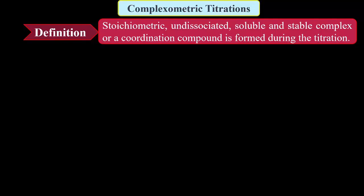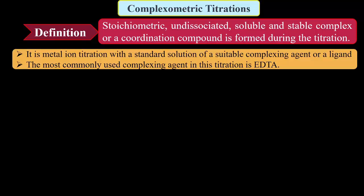Now we learn the complexometric titrations. First we have seen the definition of complexometric titrations. These complexometric titrations are stoichiometric, undissociated, soluble and stable complex or a coordination compound is formed during the titration, that is during the addition of titrant to the titrant. In complexometric titration, the metal ion solutions are titrated with the standard solution of suitable complexing agents or ligands like EDTA, cyanide ions, tartaric acid, citric acid, etc.